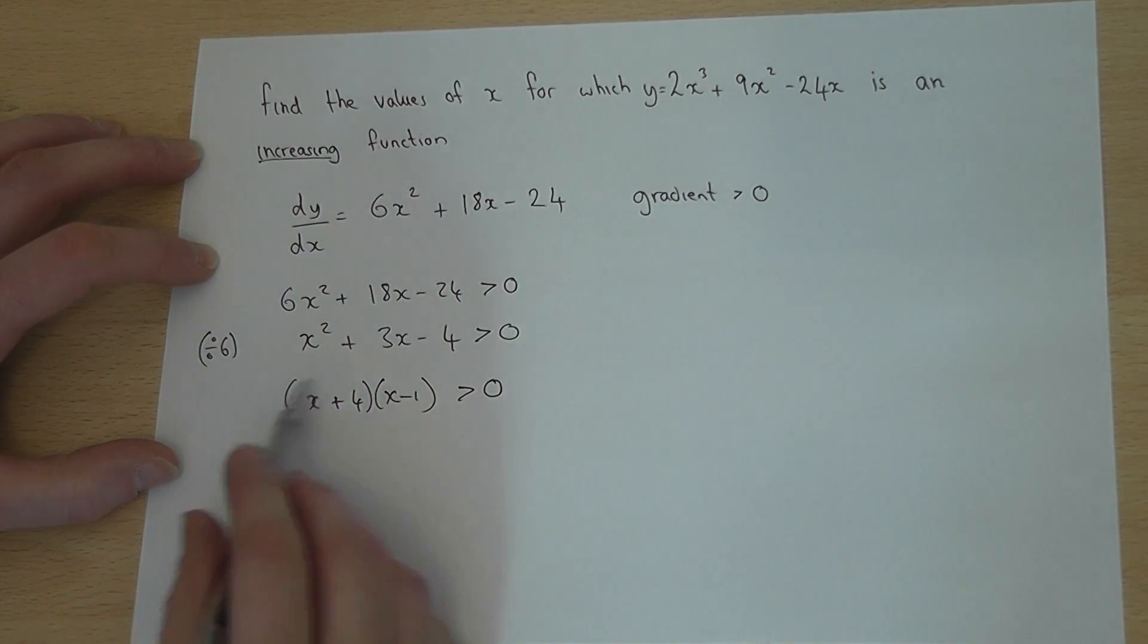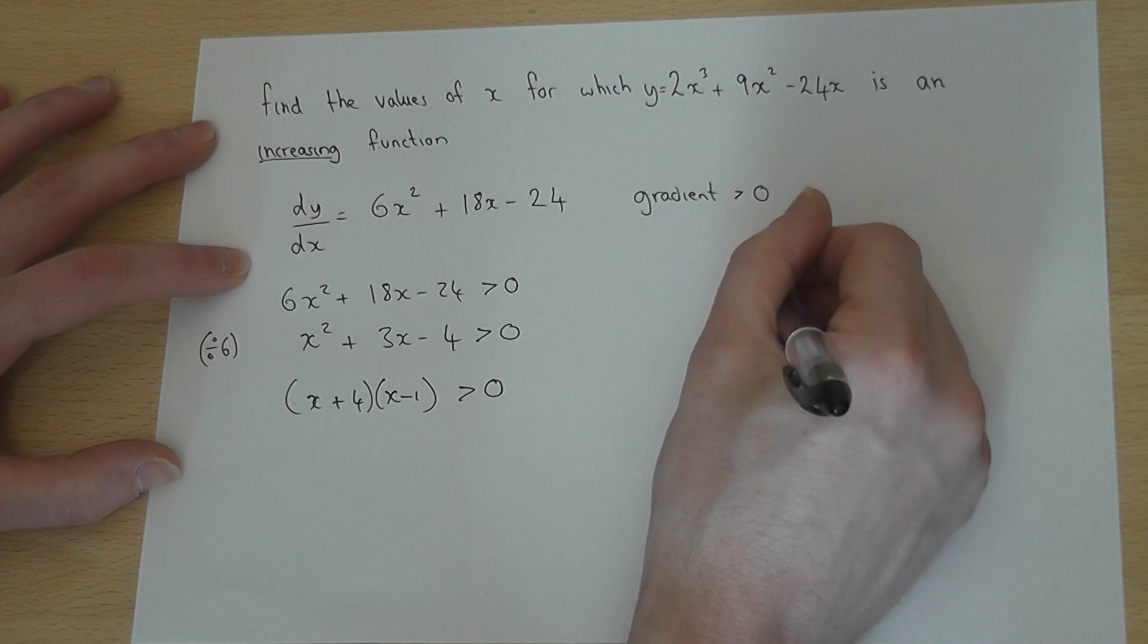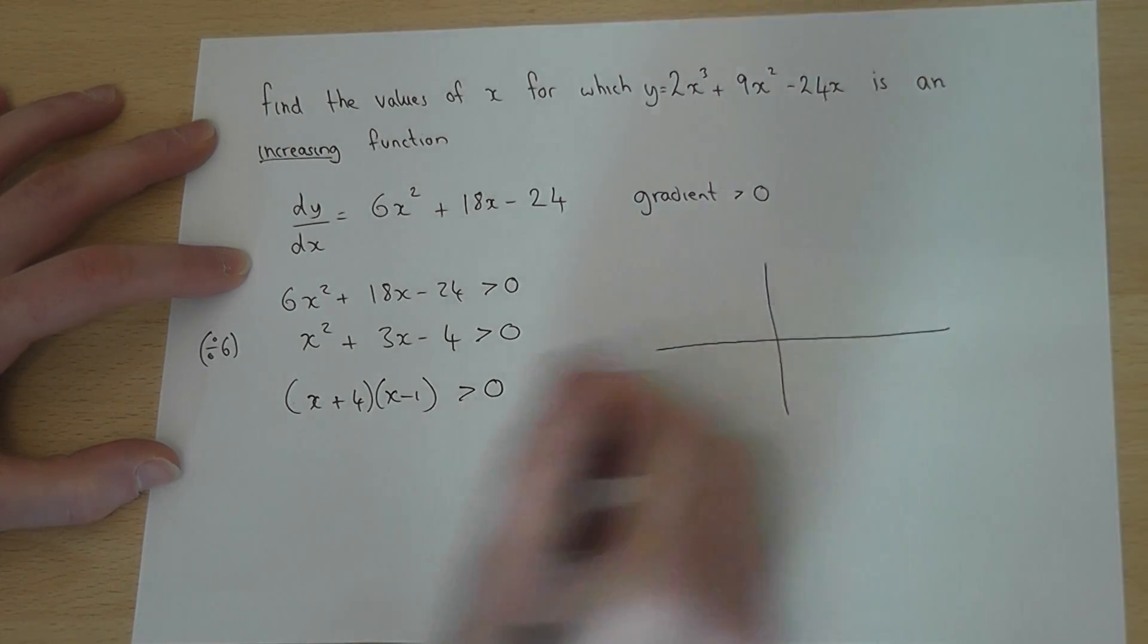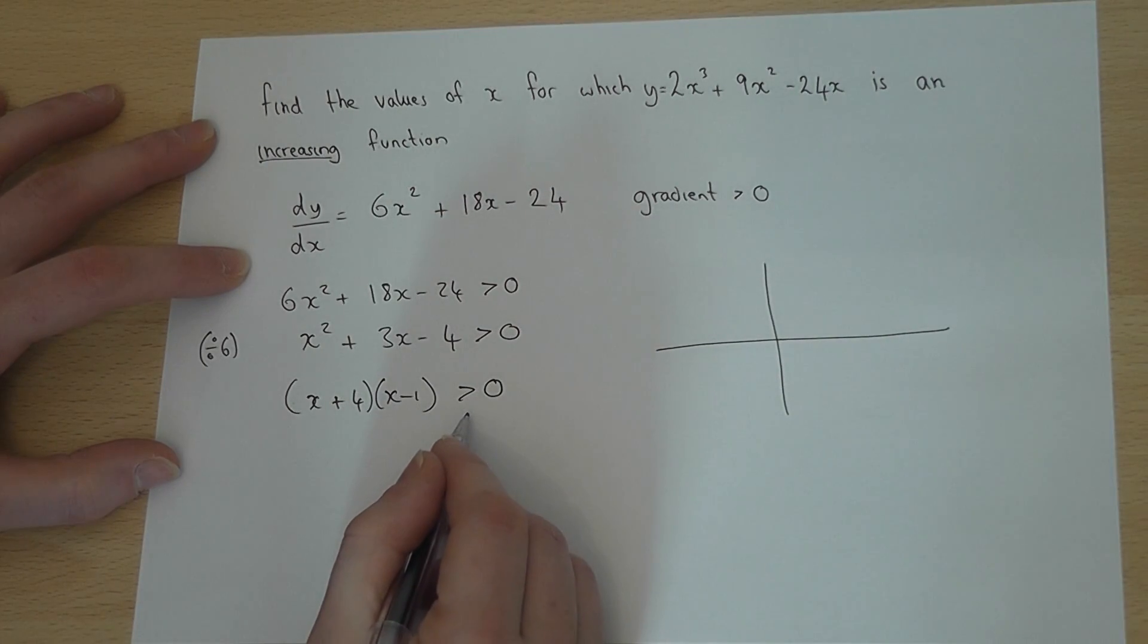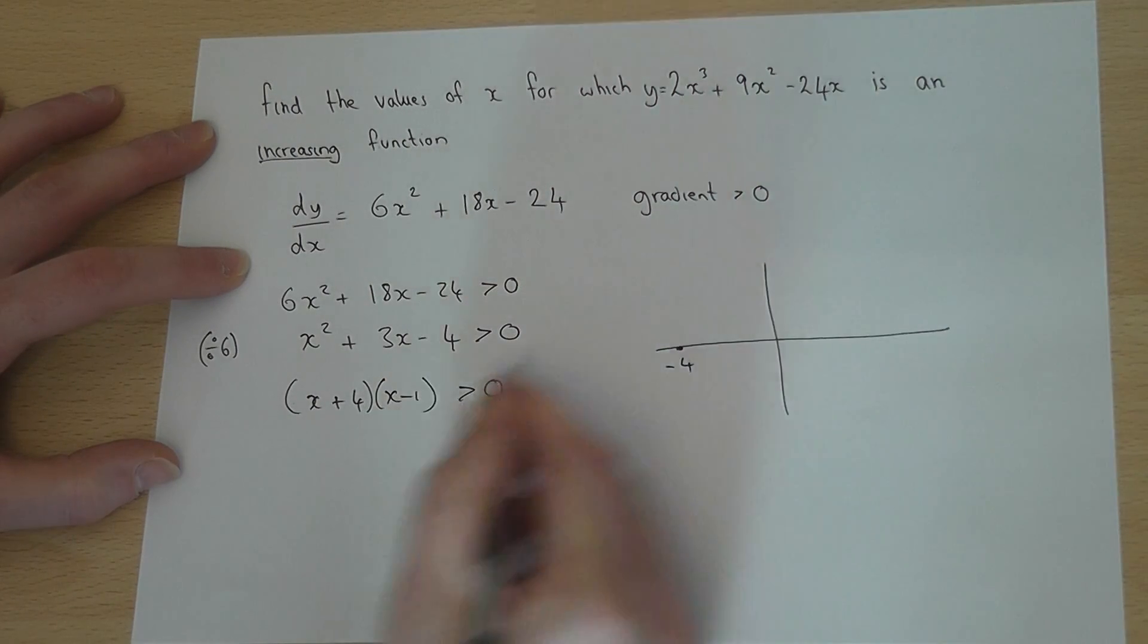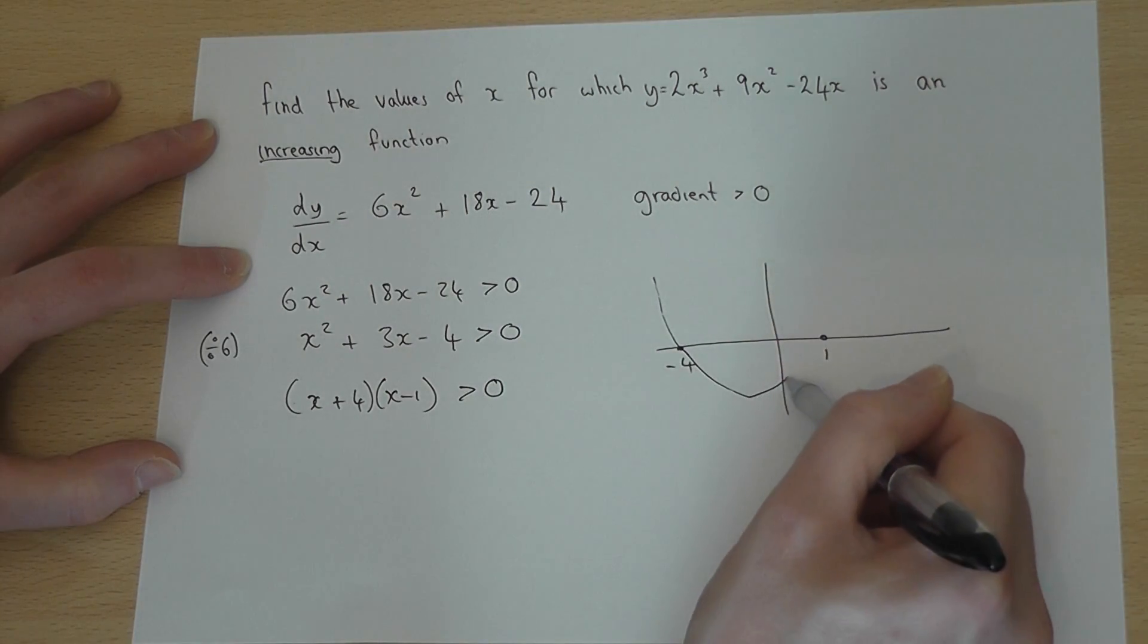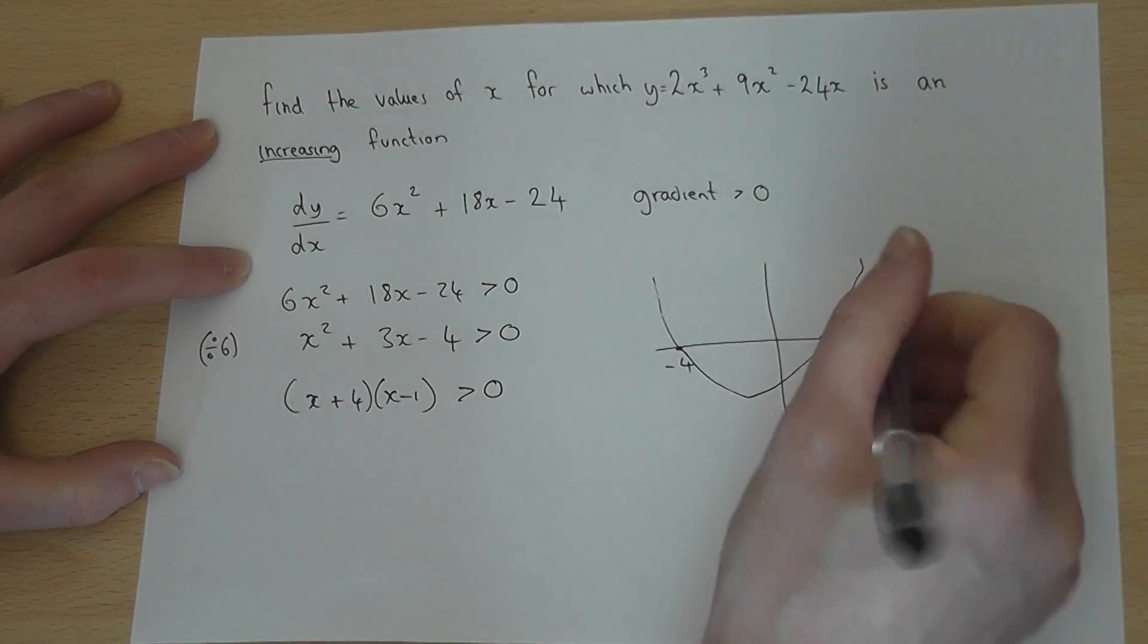So the question is for what values of x is this bigger than zero. If I sketch this function here, I know the roots are at minus 4 and plus 1. It's an x squared function so therefore it'll look like a nice smiley face. Again it's only a sketch.